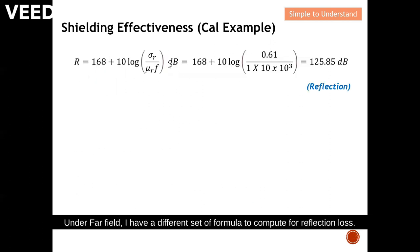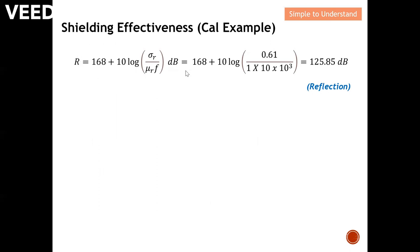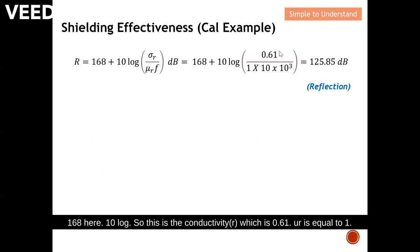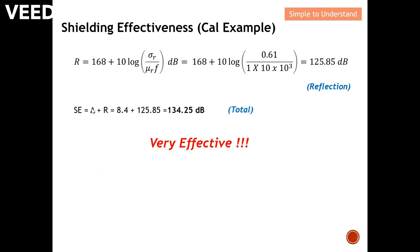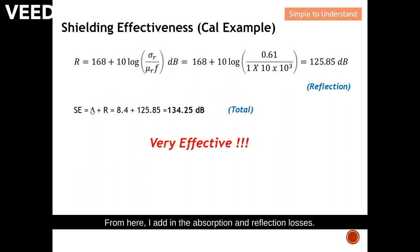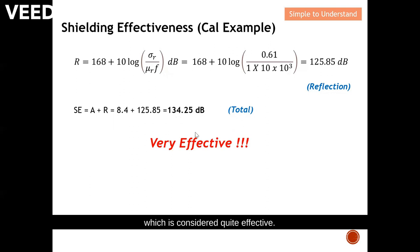For far field, I use a different set of formulas for reflection loss. The equation uses 168, 10 log, conductivity_r (0.61), mu_r (1), and frequency (10 kilohertz). I compute the reflection loss as 125.85 dB. Adding absorption and reflection loss, the total shielding effectiveness is 134.25 dB, which is considered quite effective.